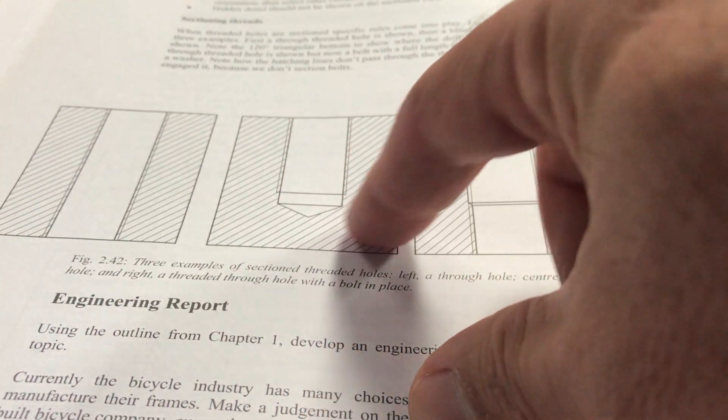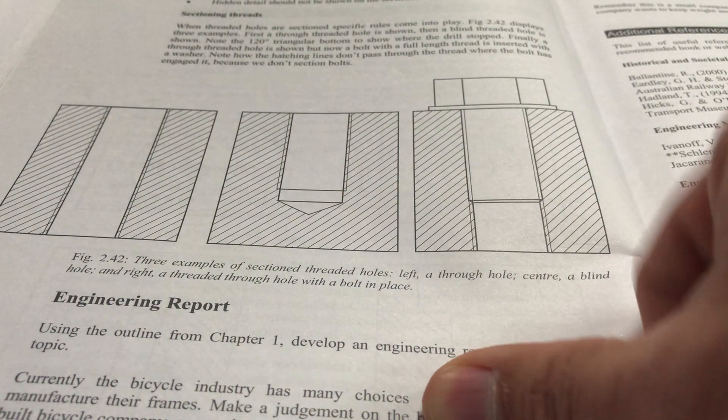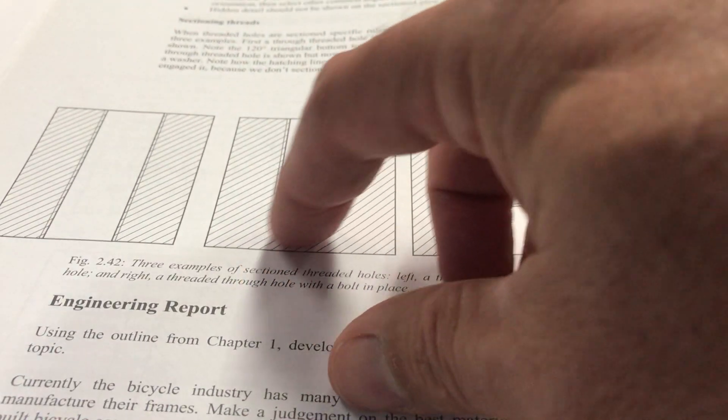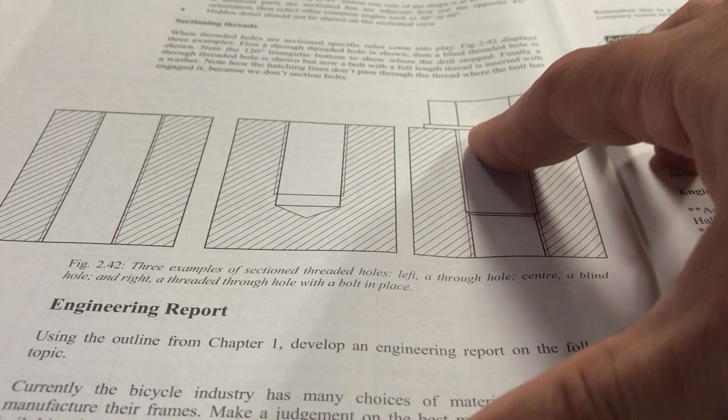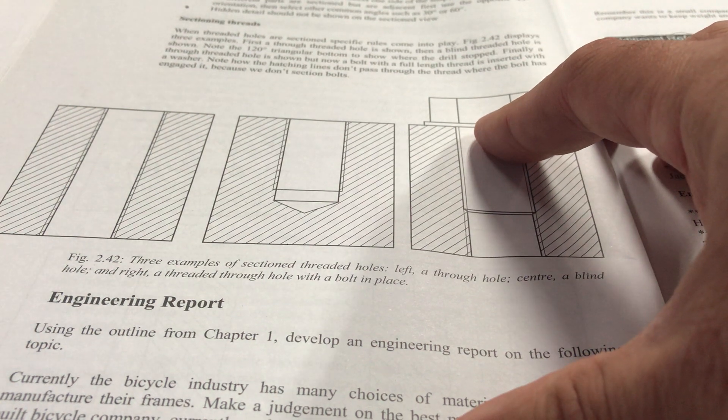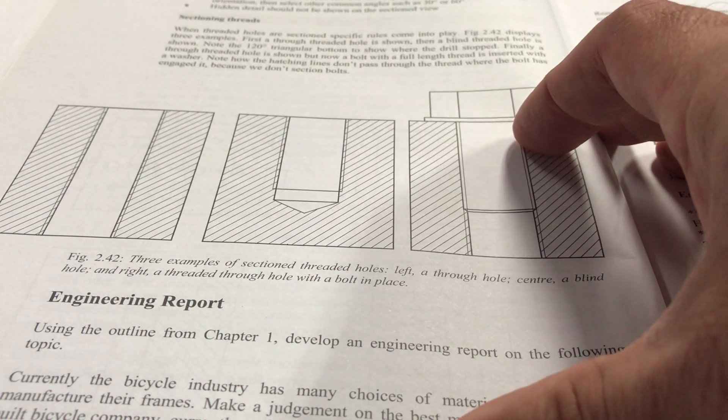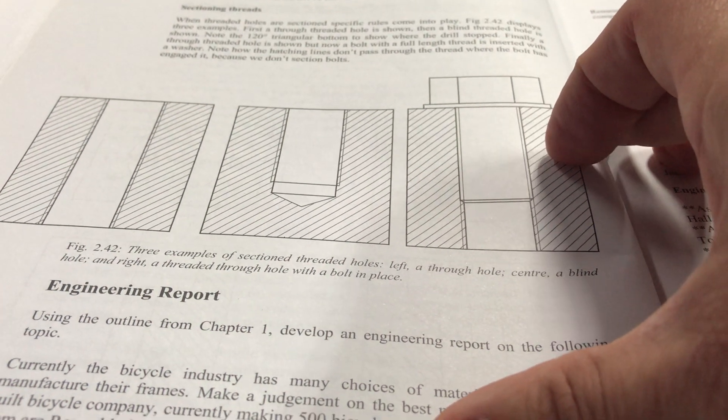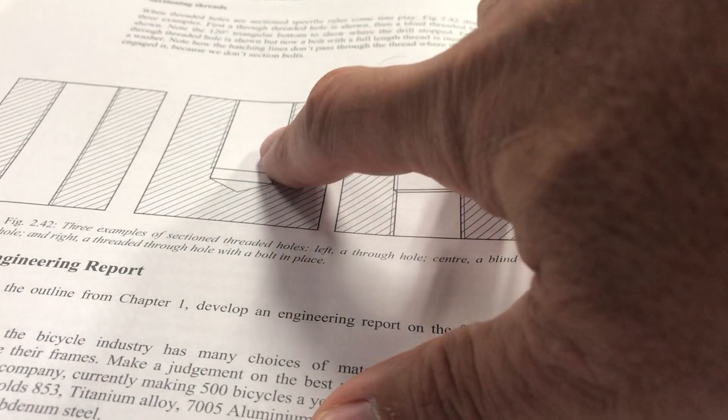This is a conventional way of creating a picture. So you've got a 120 degree triangular bottom at the hole. So if you want to know what page this is on in Copeland, so you can have a look yourself, it's on 142. So that's your blind hole.